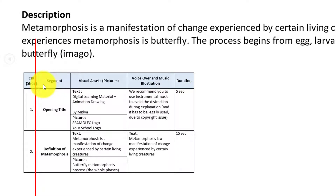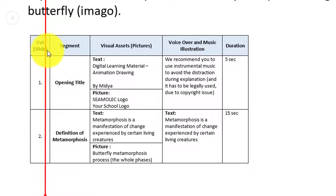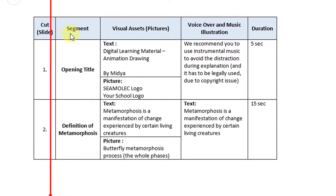To make it easier to develop into a video, you can create a table. The first column is to explain about the cut or slide you need. The second column is for the segment. The third is for the visual assets or pictures you want to show in the video. The next column is for voiceover and music illustration, and the last column is for the estimated duration of each explanation.